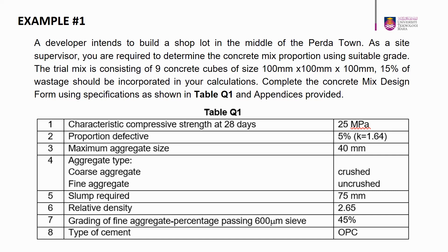The given parameters in table Q1 are as follows: characteristic compressive strength at 28 days is 25 MPa; proportion defective is 5%, hence constant K is 1.64; maximum aggregate size is 40 mm; coarse aggregate is crushed and fine aggregate is uncrushed; slump height is 75 mm; relative density factor is 2.65; percentage of fine aggregate passing 600 micron sieve is 45%; and the cement type is ordinary Portland cement.